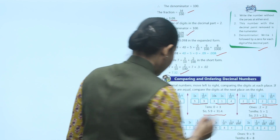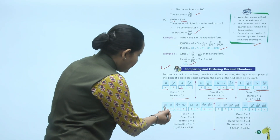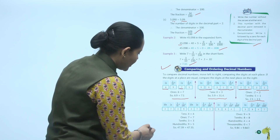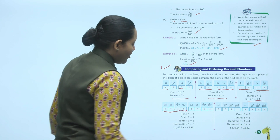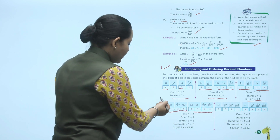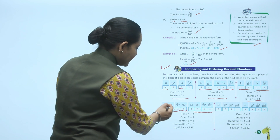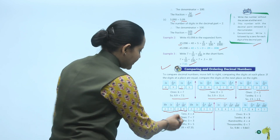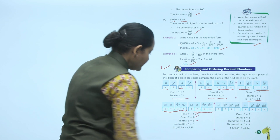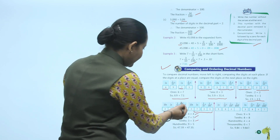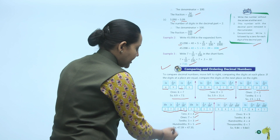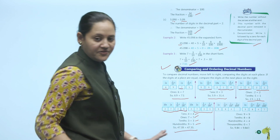Next: comparing 47.39 and 47.35. Tens place is 4 for both, ones place is 7 for both, tenths place is 3 for both. Moving to hundredths: 9 vs. 5 — nine is greater than 5, so 47.39 is greater than 47.35.